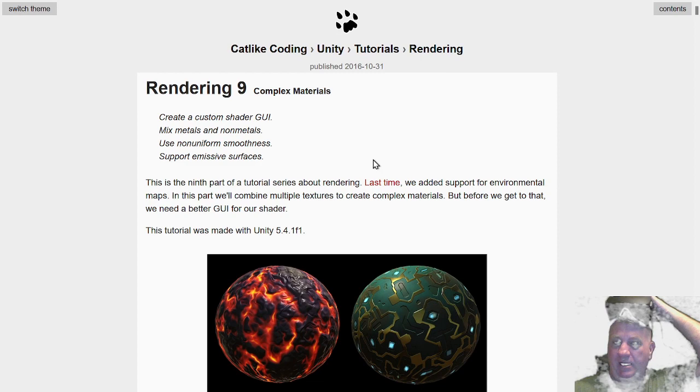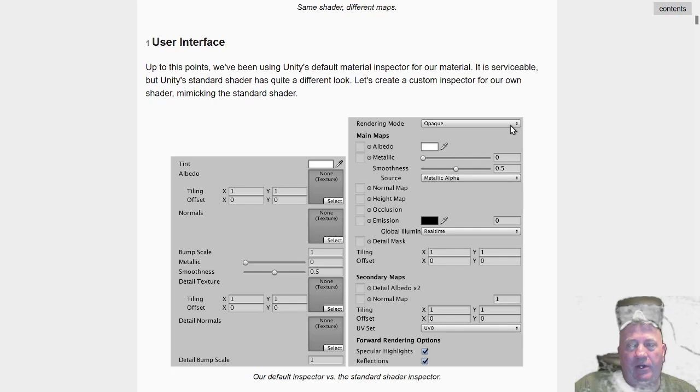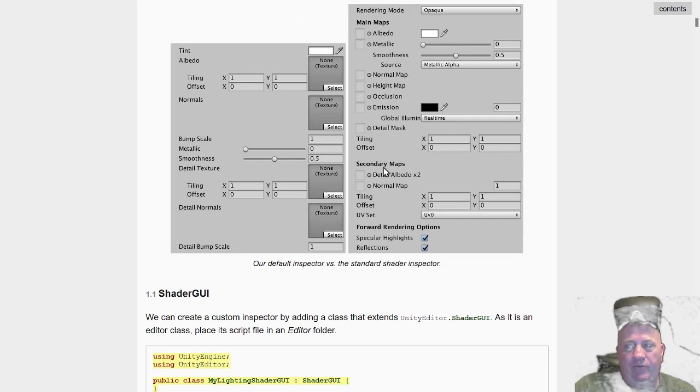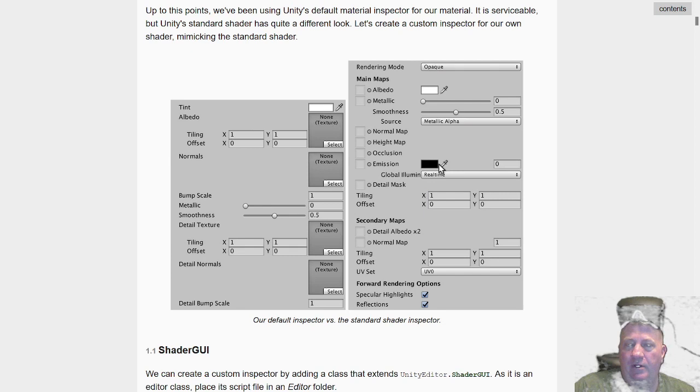From Catlike Coding, which basically gets into complex materials. The biggest thing that it does is include secondary maps with detailed information, so it does occlusion and normal maps. He ends up taking it through the tutorial from the non-standard shader-based with no widget for development and takes you through the whole step and practice of implementing a custom interface.